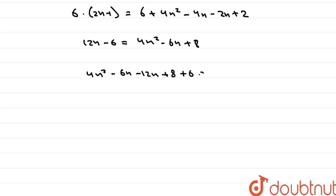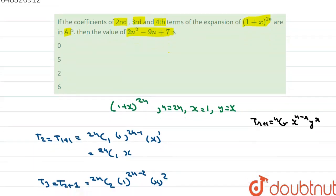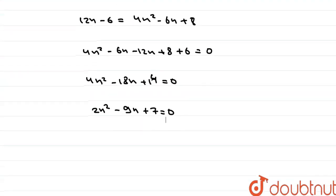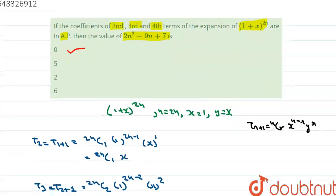Rearranging, we get 4n² - 18n + 14 = 0, which simplifies to 2n² - 9n + 7 = 0. Therefore, the value of 2n² - 9n + 7 equals 0, so option A (0) is the correct answer.